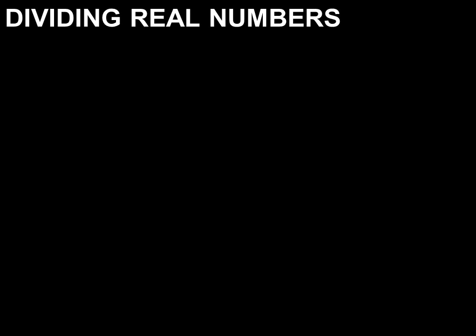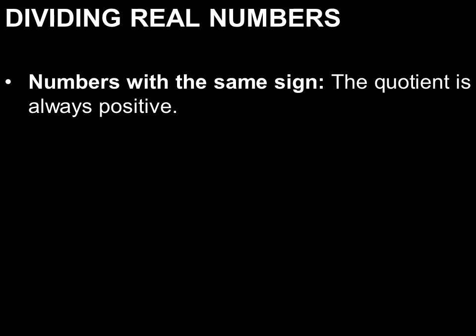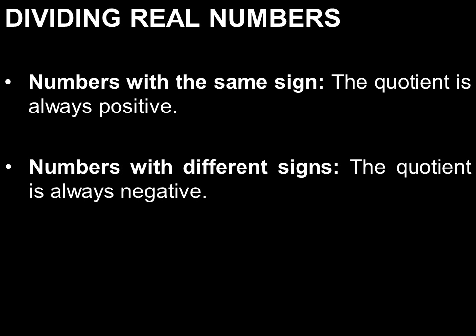Lastly, let's go to dividing real numbers. Numbers with the same sign have a quotient which is always positive, and numbers with different signs have a quotient which is always negative.